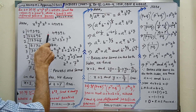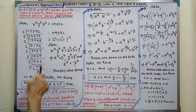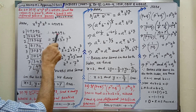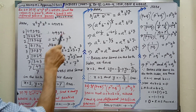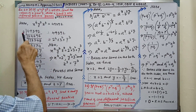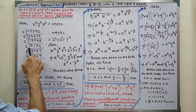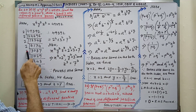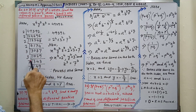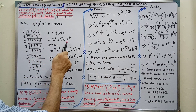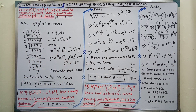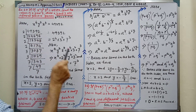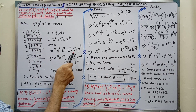So, after doing LCM, we are getting 49392 equal to 2 to the power 4, 3 square and 7 cube. Now this is equal to this.